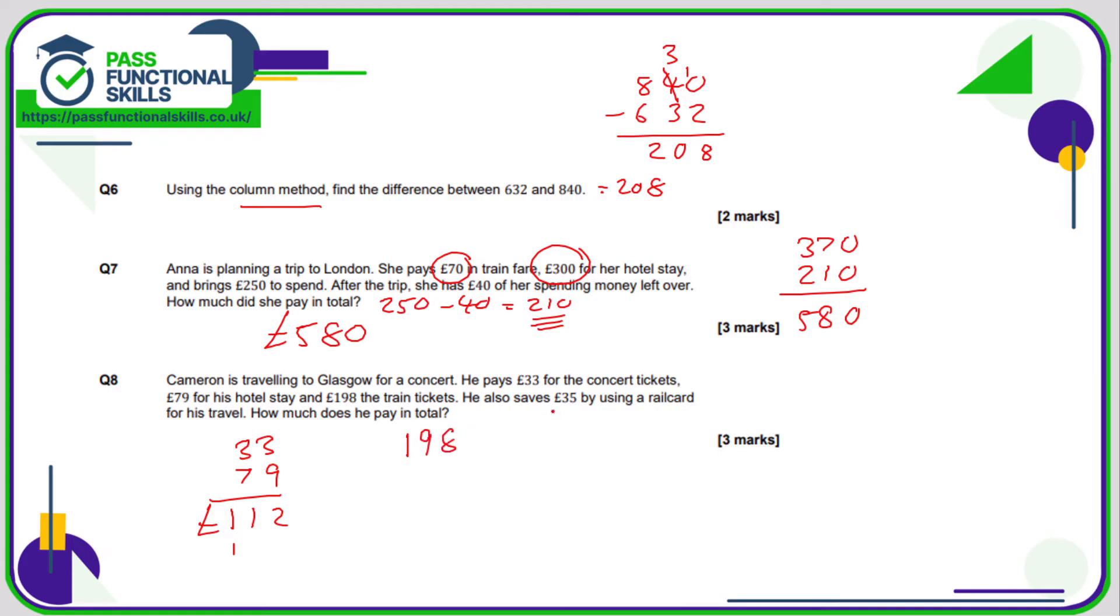The train tickets are 198, but there was a 35 pound saving, so we're going to subtract the 35 from the 198. Eight take away five is three, nine minus three is six, one minus nothing is one. So in total, Cameron spends 112 pounds for concert tickets and hotels and 163 for the train.